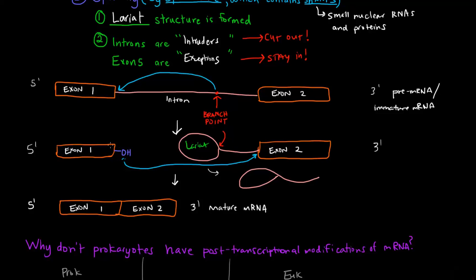So, what happens is the exon number one and exon number two become connected and then this lariat structure dissociates away. So, now, we went from a pre-mRNA or immature RNA to a spliced and mature mRNA. So, that's how splicing works.